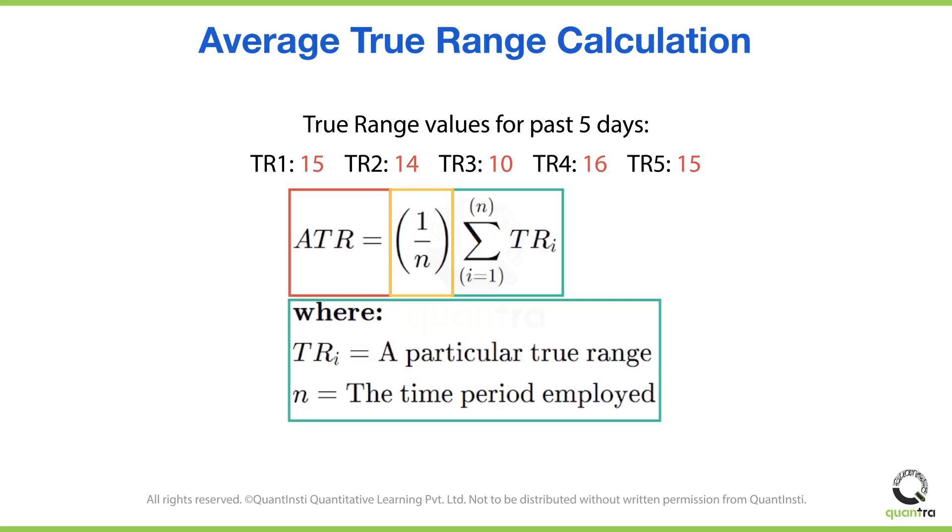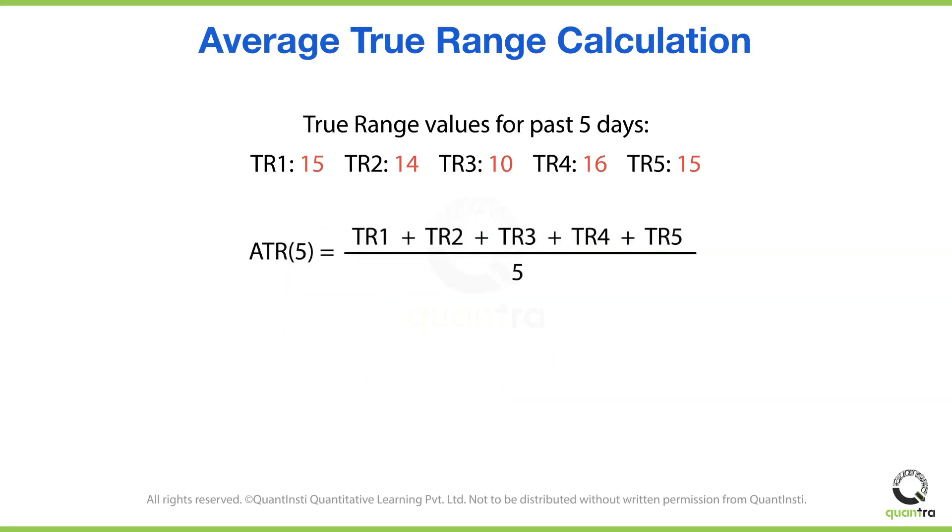Now let us use this formula and compute the ATR value based on the true range values of the past five days. The total of all the true range values is 70, and dividing this by the number of days, which is 5, we get the 5-day ATR value is 14.